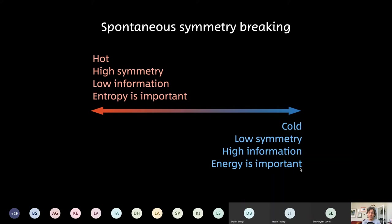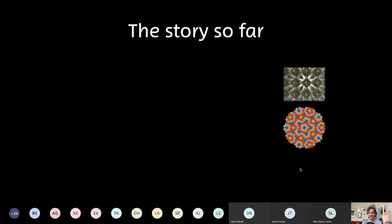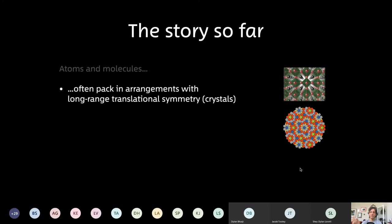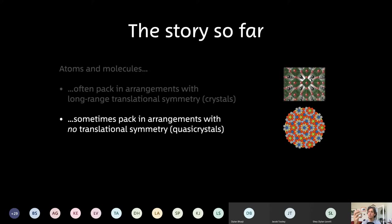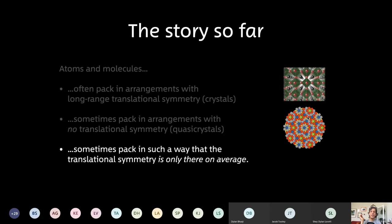I've told you an awful lot so far, so let me pause and recap before the final stretch. Atoms and molecules often pack together in arrangements with long-range translational symmetry — like crystals. Sometimes, because of the sorts of local packing rules we talked about, they pack in arrangements with no translational symmetry — that's quasi-crystals, like the Penrose tiling. The final thing I want to talk about is the fact that atoms sometimes pack in such a way that the translational symmetry is only there on average — and the trouble with averages is that they can be very misleading.